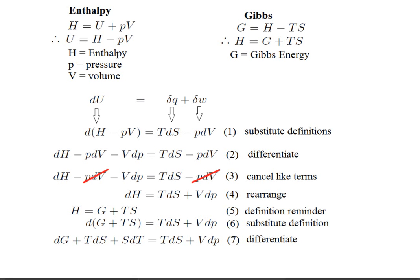Line seven is another differentiation. This is identical to line two in terms of the operation. We're taking the derivative this time of TS and writing it down on the left side. So this gives us dG plus TdS plus SdT.